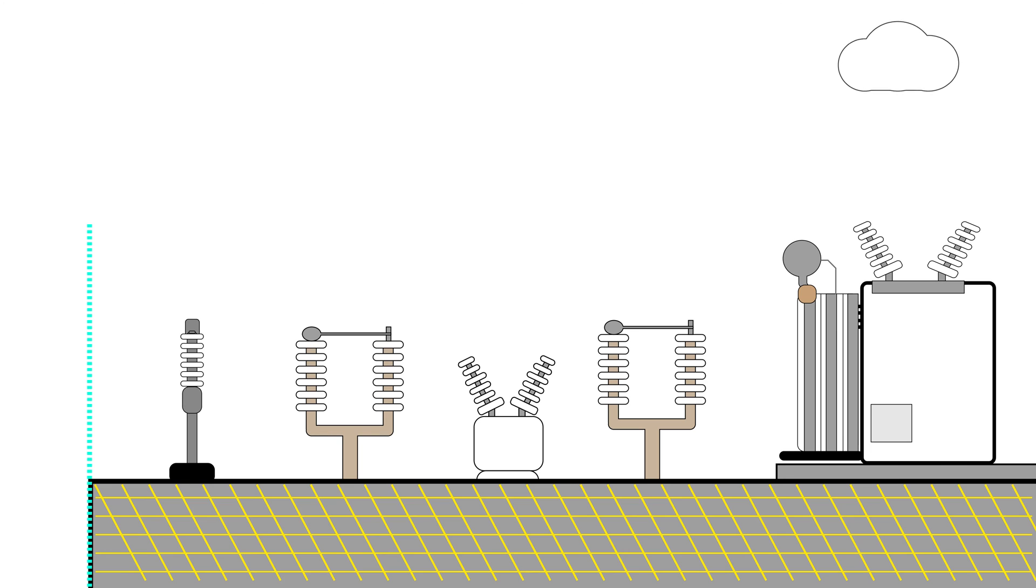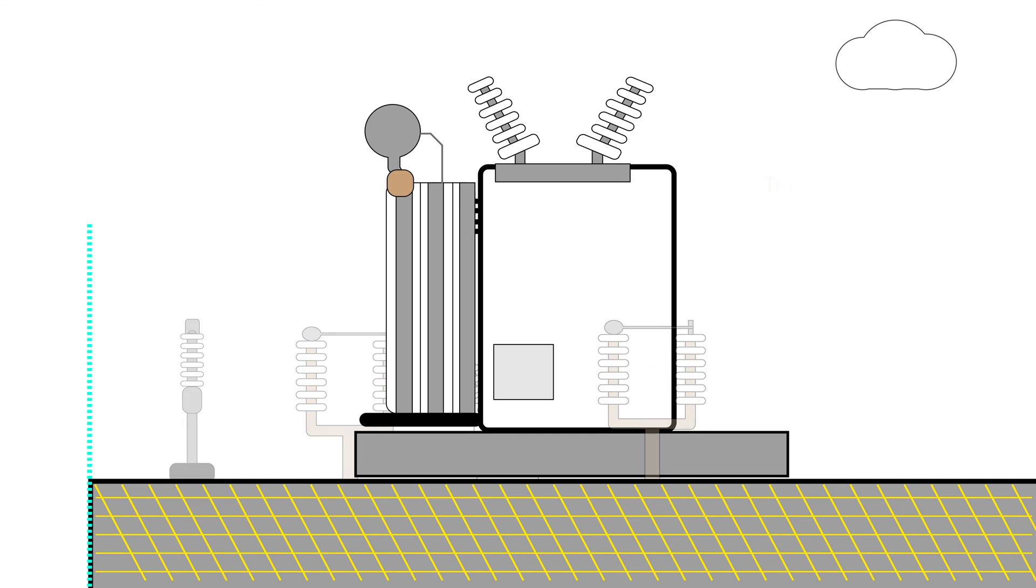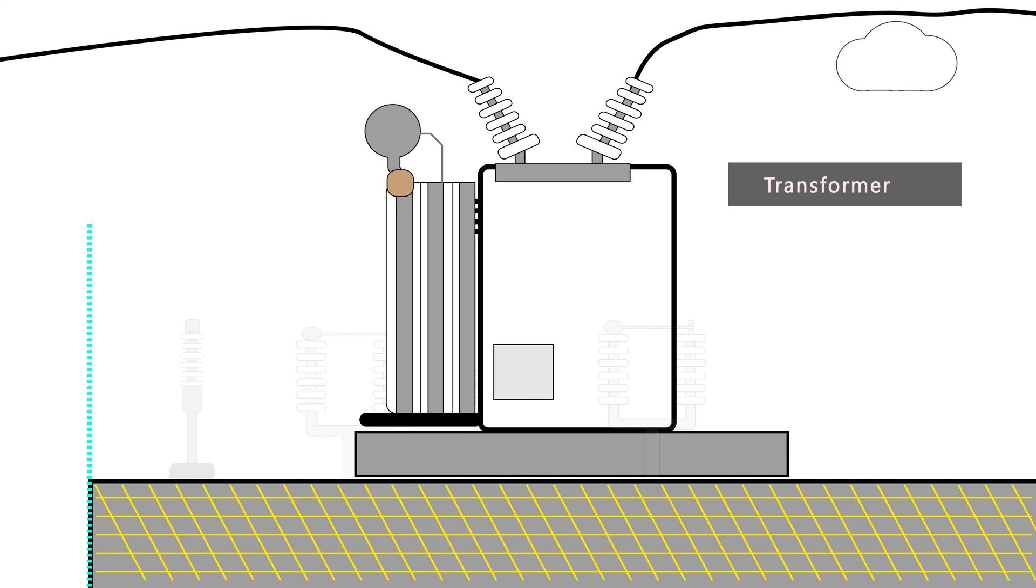Now the most expensive and largest asset inside the substation is the transformer. The transformers are playing a very important role inside a substation because they step up and step down the voltage. Now one of the most striking features of the transformer is the giant radiator that's normally bolted on the side of the transformer.